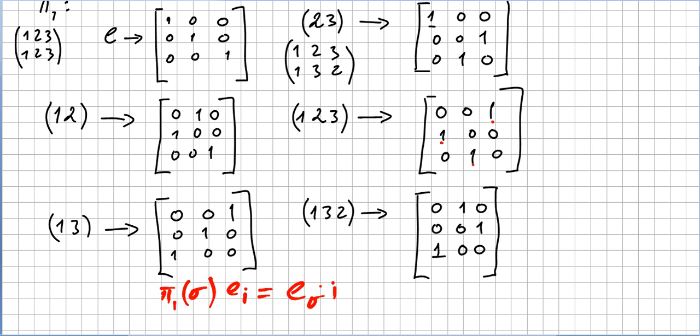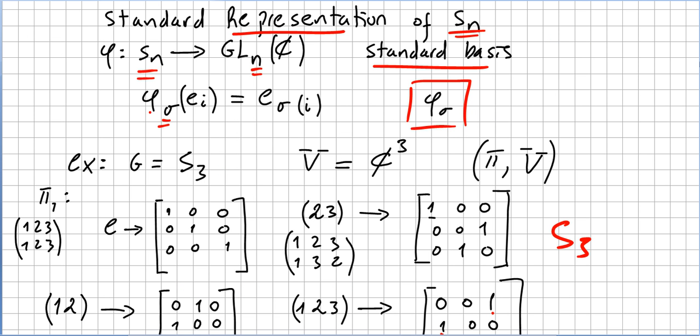E_σ(i), as I said before. This is the standard representation in this case of S3, and you can do the same for Sn. Here you are: φ of σ(i) and E of σ(i).